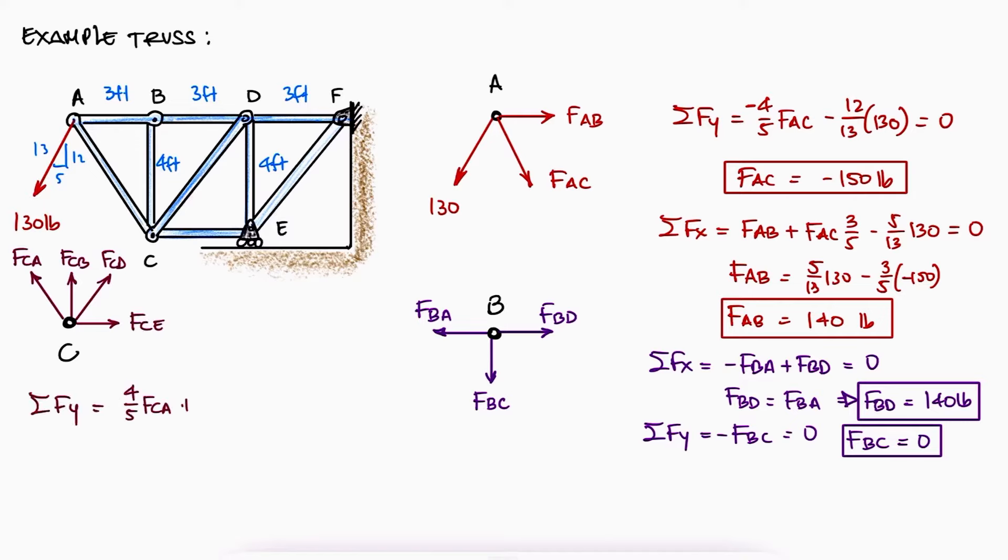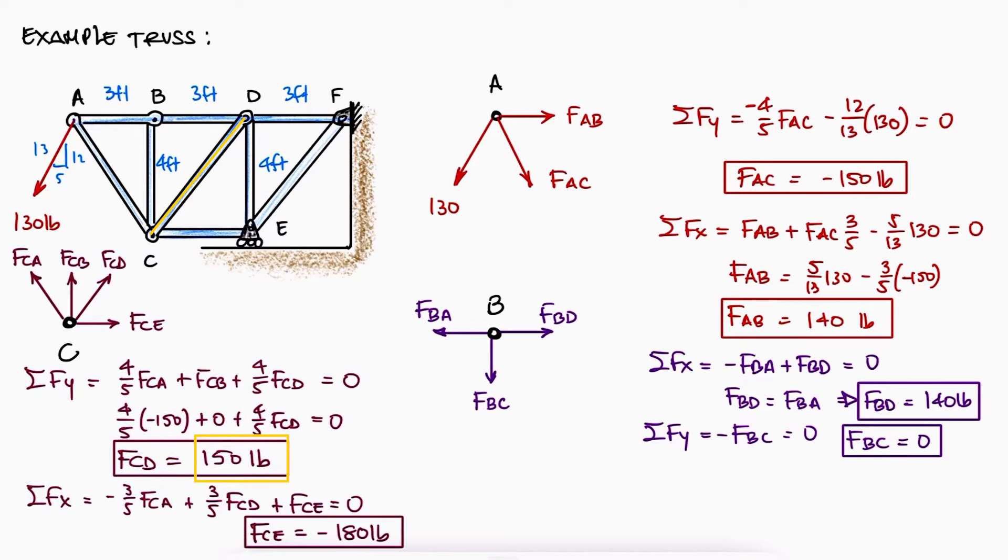At joint C, we can find FCD and FCE. CD is in tension and CE in compression. Notice that as we progress through our calculations, we're using the values of the variables we've found so far, for example, FCA, FCB, and FCD.